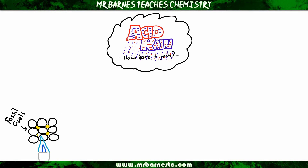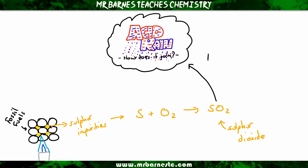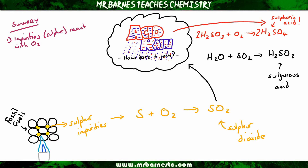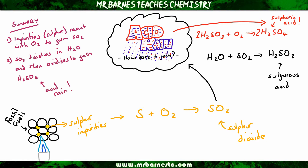However, there's also something in fossil fuels — an impurity called sulfur. That sulfur, when it reacts with oxygen, forms something called sulfur dioxide, SO2. When that goes up into the clouds it dissolves in the water and makes something called H2SO3, that's called sulfurous acid. That then reacts with oxygen in the atmosphere and further produces H2SO4, which is sulfuric acid. The sulfur impurities produce SO2, which dissolves in rainwater to make sulfuric acid — that is your acid rain.